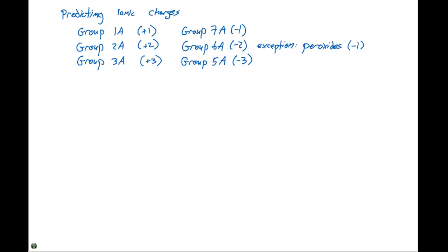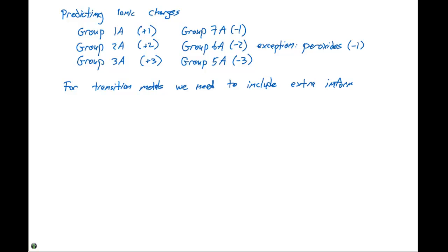Notice that we skipped Group 4. The Group 4 complexes will generally form molecular compounds, which we'll discuss a little bit later. In addition to the binary compounds, we need to look at nomenclature for transition metal complexes. For transition metals, we need to include extra information — Roman numerals — and these indicate the charge of the transition metal cation.